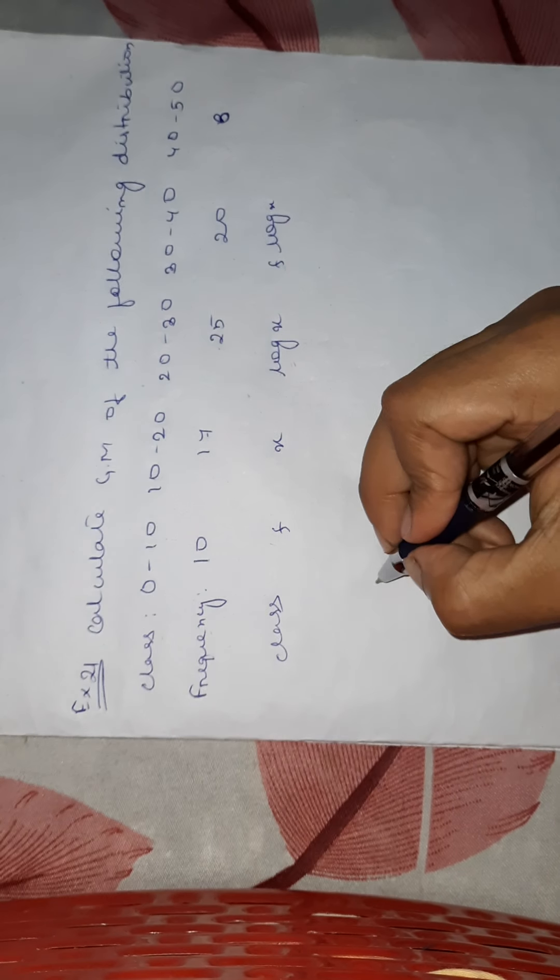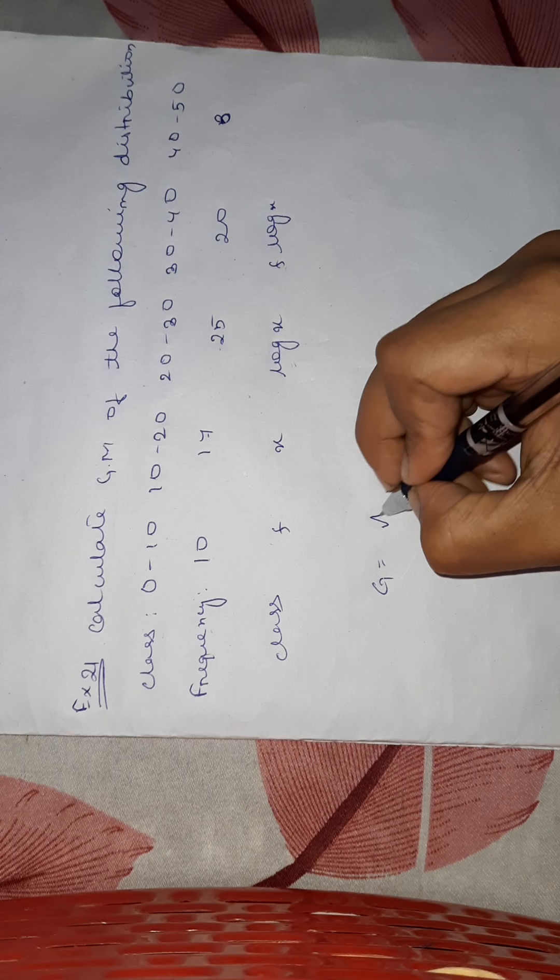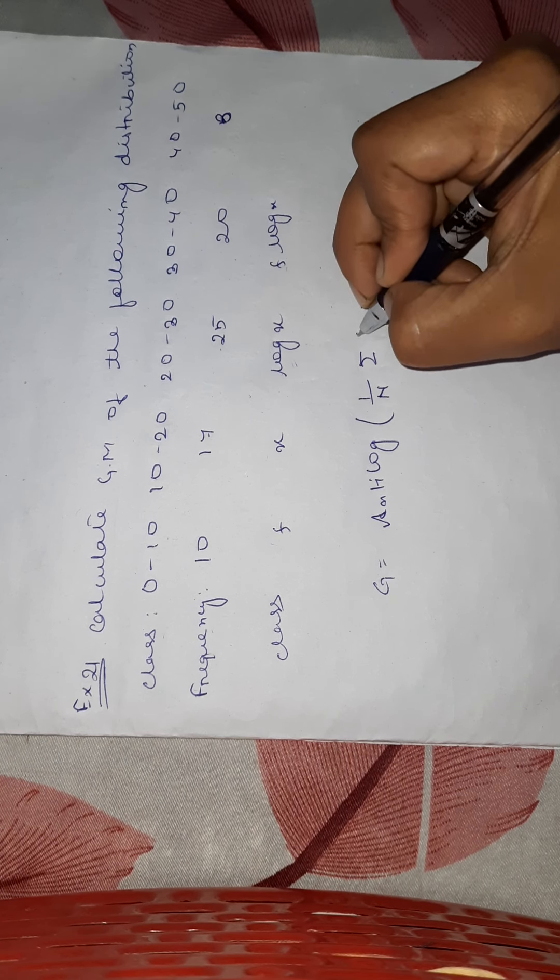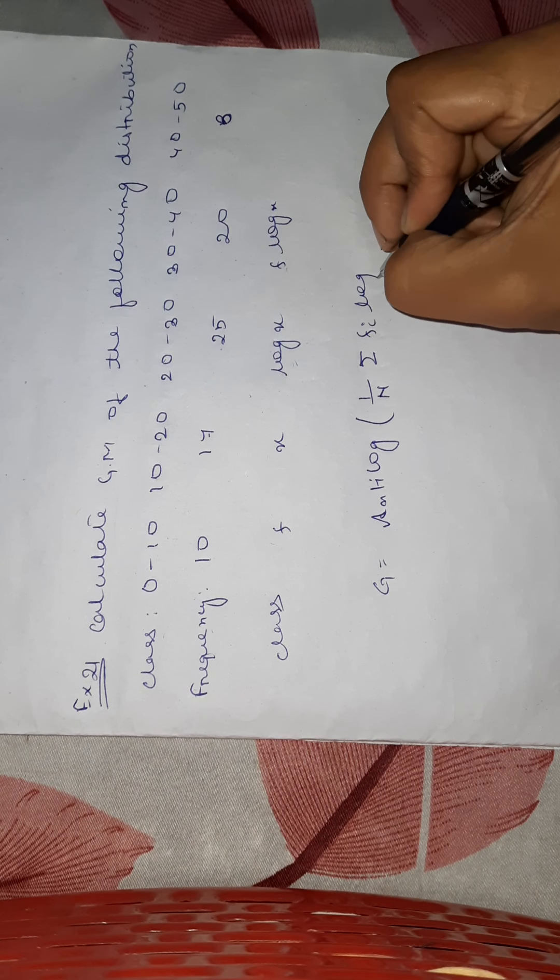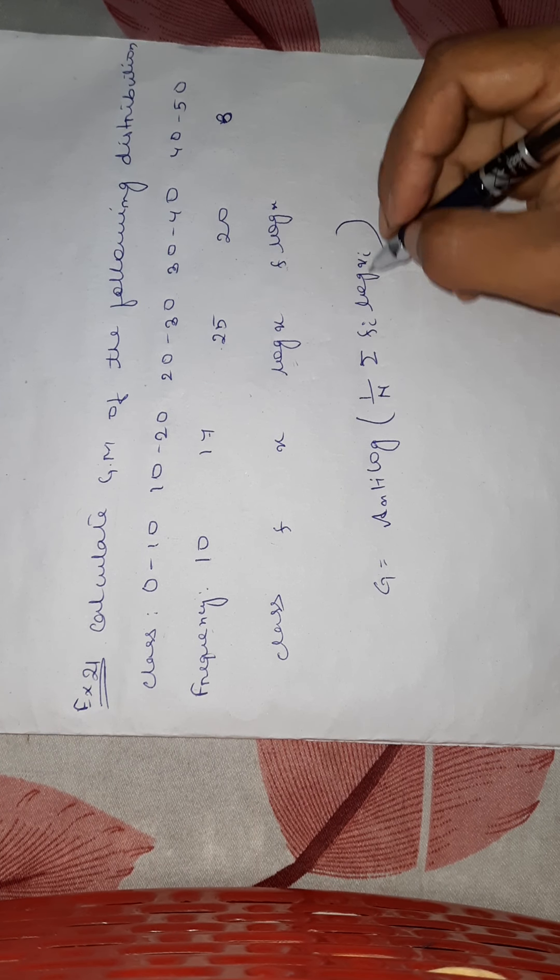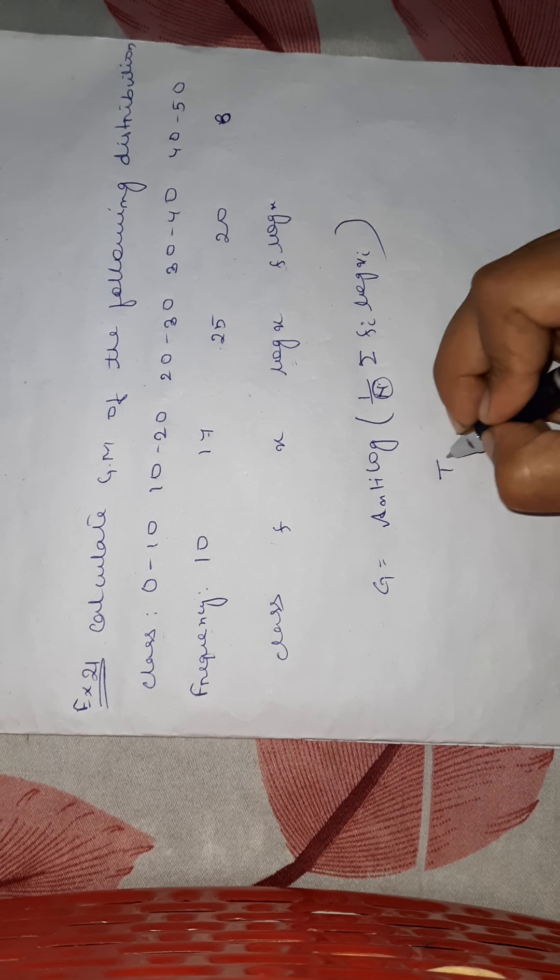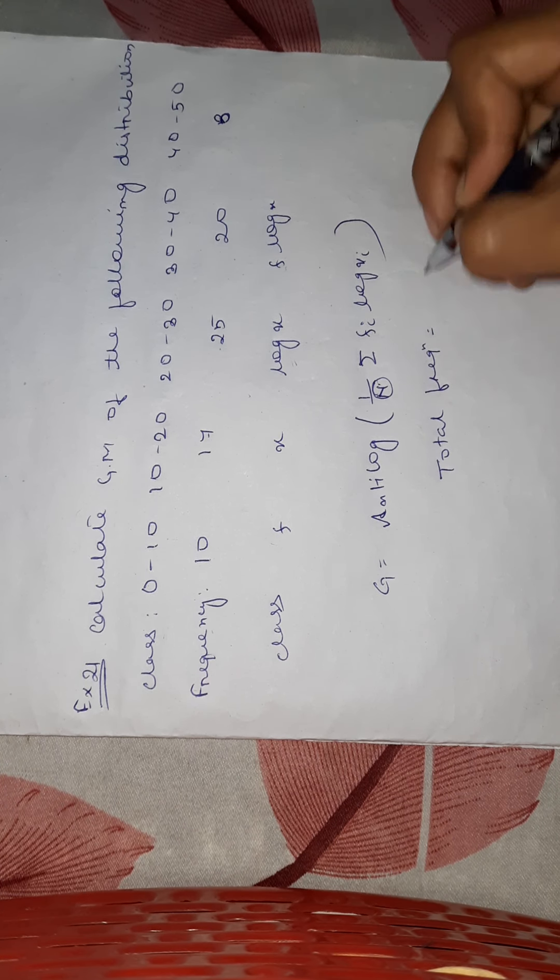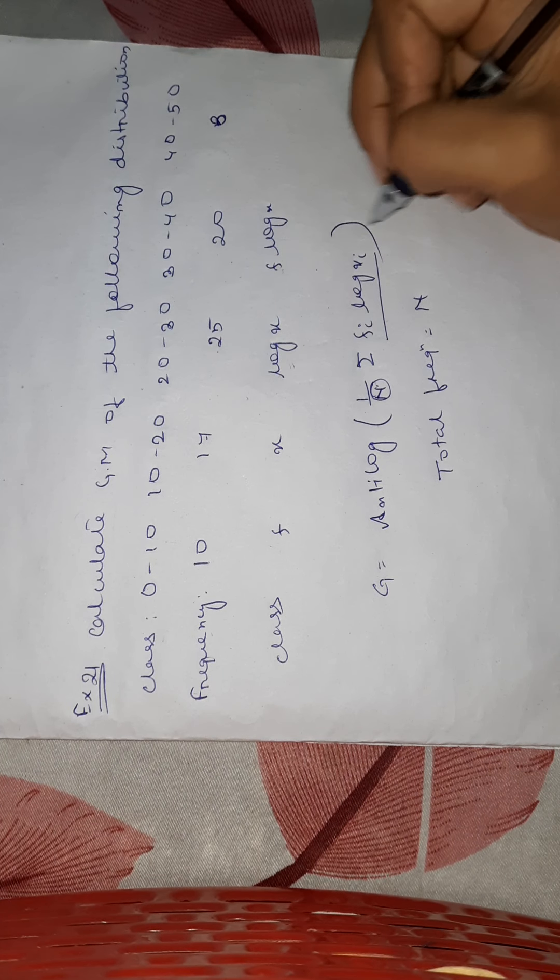After that, you have to put it in the formula. The formula for grouped data is 1 by n, summation of fi into log xi. Your n will be total frequency. Total frequency means n. And fi into log xi, you will get from these values.